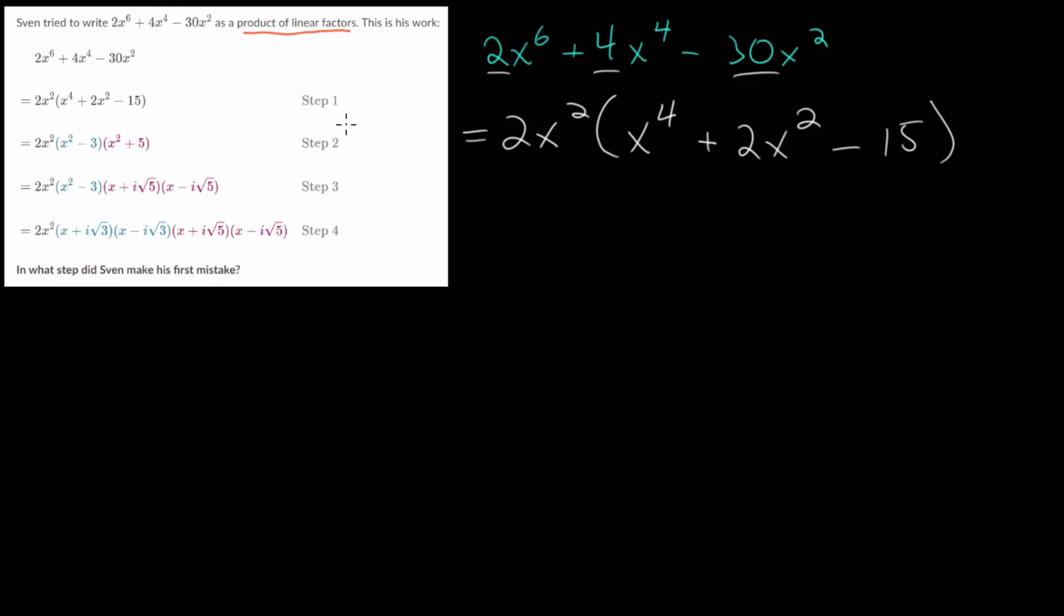Now we're going to focus on this 4th degree polynomial on the inside, since it has the special property that we're missing the cubic term and the first power term. You might notice that this looks like a quadratic. In fact, if we rewrite it as x squared squared plus 2x squared minus 15, it might be a little bit more obvious. From here, we can make a substitution. We can say that u is equal to x squared.